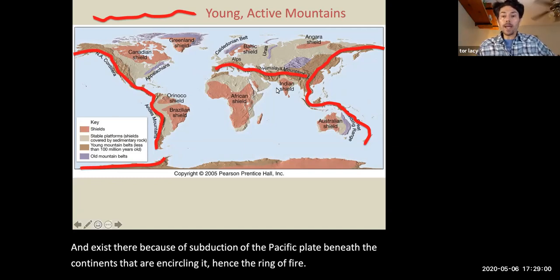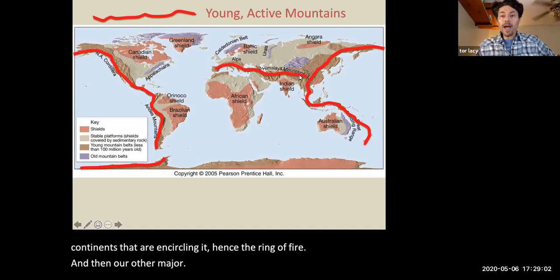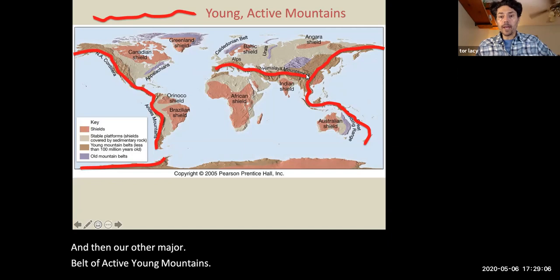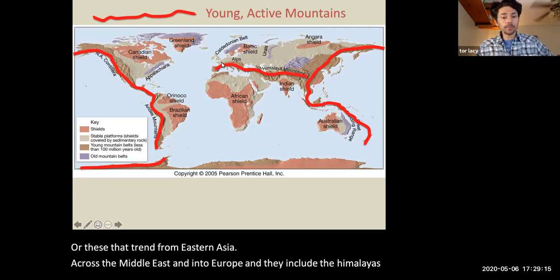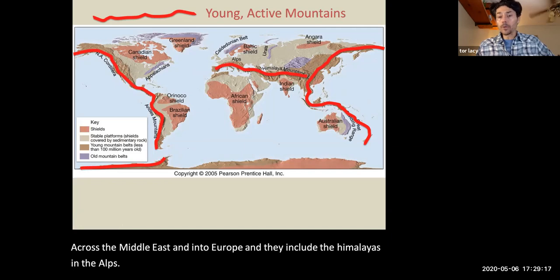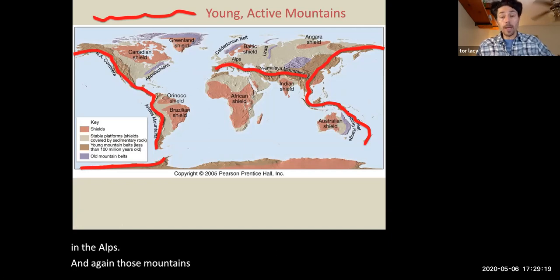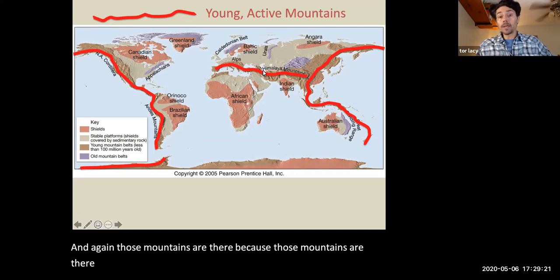And then our other major belt of active young mountains are these that trend from Eastern Asia across the Middle East and into Europe, and they include the Himalayas and the Alps. Those mountains are there and growing because that is where we have a plate boundary.